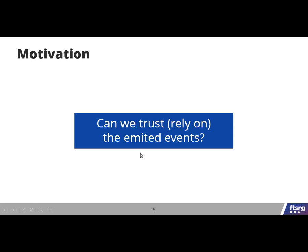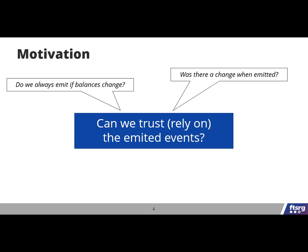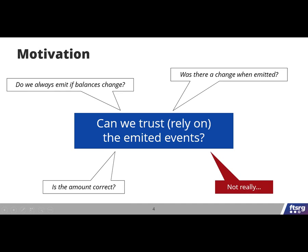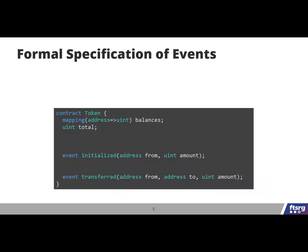For the token example we should ask: do we always emit if the balances change? Or from the other direction, if we emit, was there really a change? Did we provide the proper arguments for the event — like if the event says 100 tokens were transferred, was it really 100 in the actual execution? The short answer is: not really. Events are code written by humans and just like any code, they can be buggy. So to catch such bugs, we provide a specification and verification approach for contracts that use events.